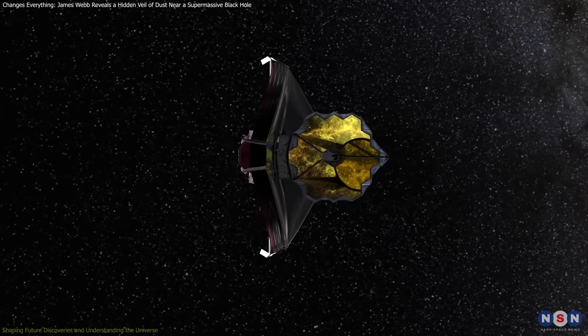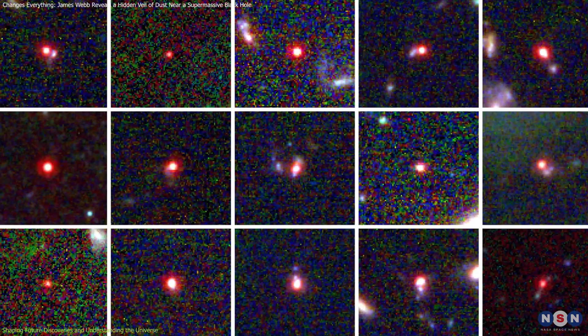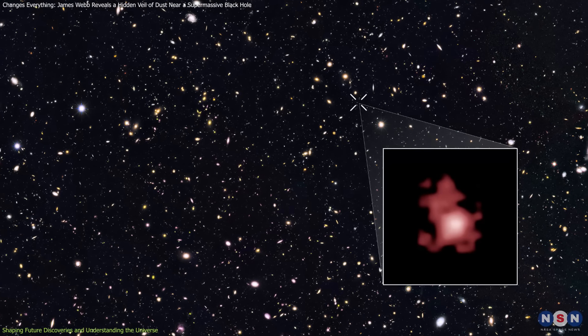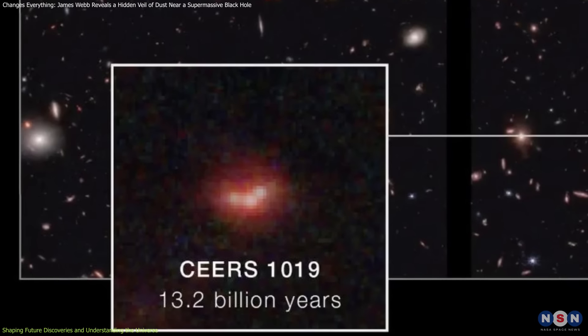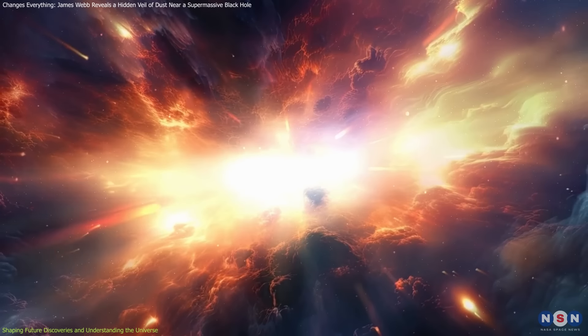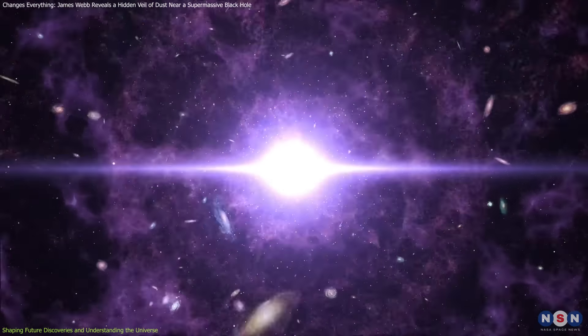Among Webb's most astonishing discoveries are the oldest and most distant black holes ever observed, hidden within galaxies like GNZ 11 and Sears 1019. These findings are peering into the cosmic dawn, mere hundreds of millions of years after the Big Bang.